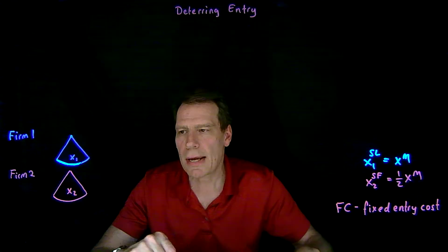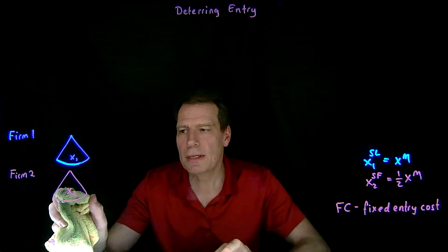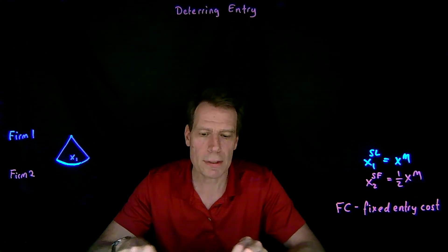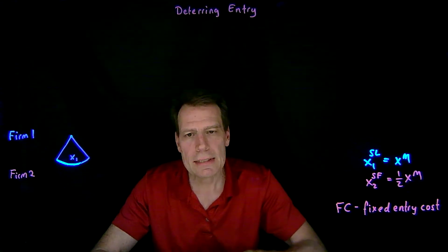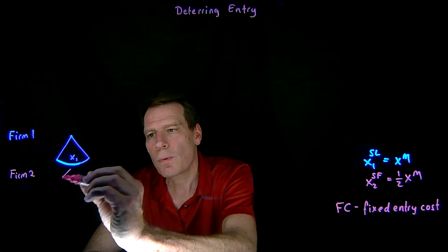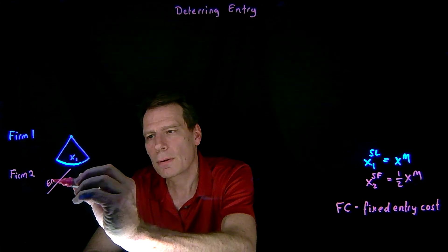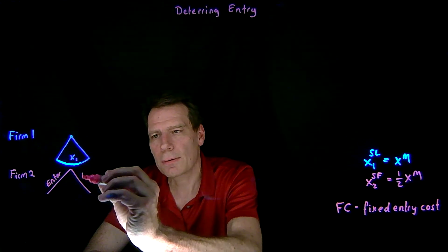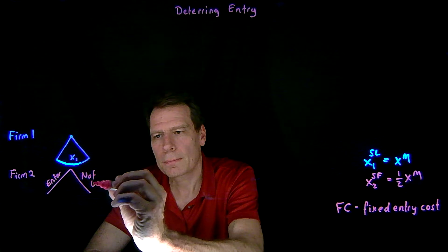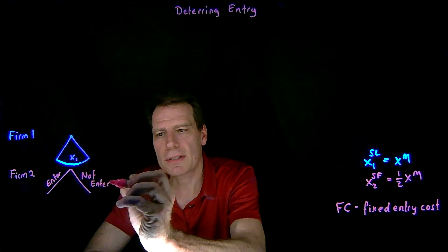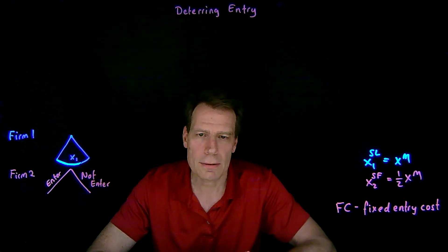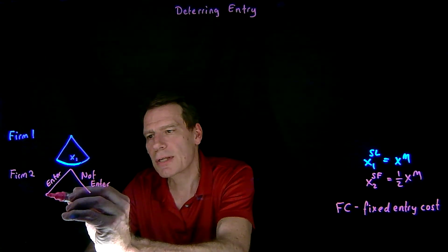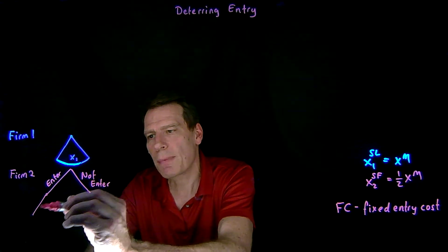We want to change the game so that firm 2 doesn't immediately choose how much to produce after observing firm 1. Instead, it's going to decide whether to enter or not enter. And only if it has decided to enter and to pay that fixed entry cost does it then have to decide how much to produce.